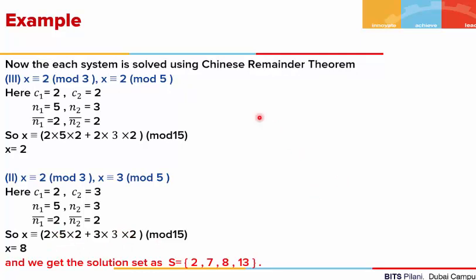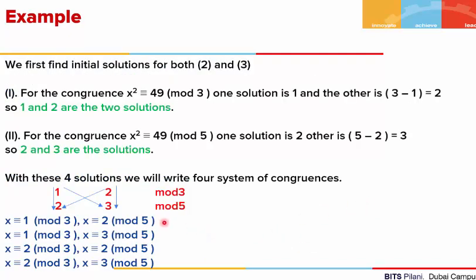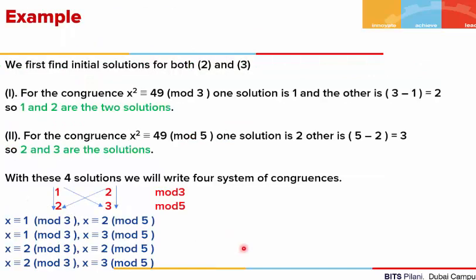Solving the other two congruences in the same way gives X = 2 and X = 8. So we have four solutions: 2, 7, 8, and 13. When we wrote the system of two congruences, we got two solutions from the first congruence and two from the second, which together give four solutions in total.